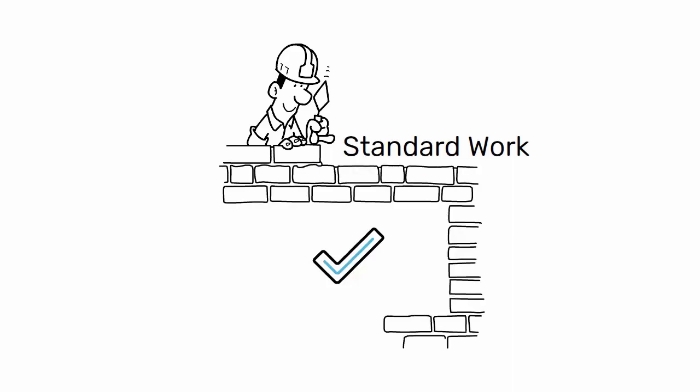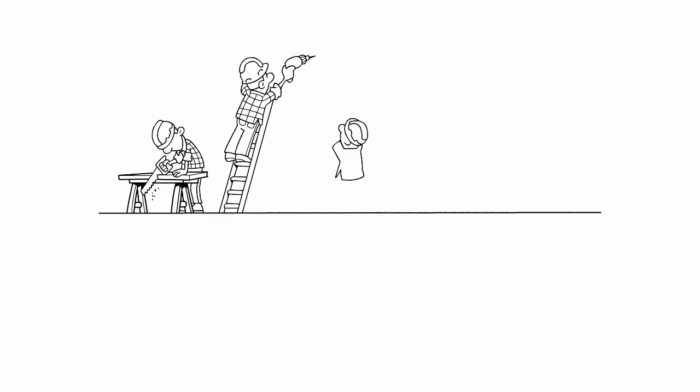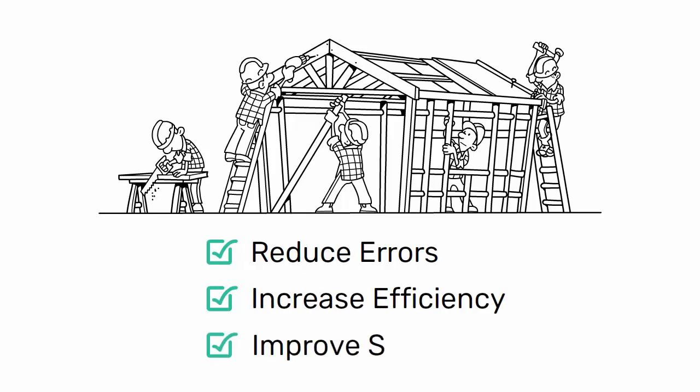Standard work is another important component of lean construction. This involves establishing clear and consistent procedures for performing tasks on site. By having standard work processes in place, construction companies can reduce errors, increase efficiency, and improve safety.